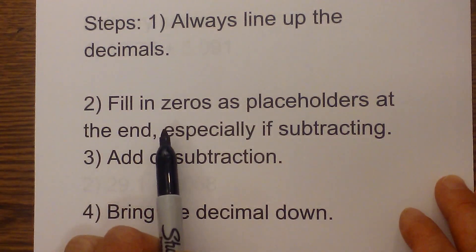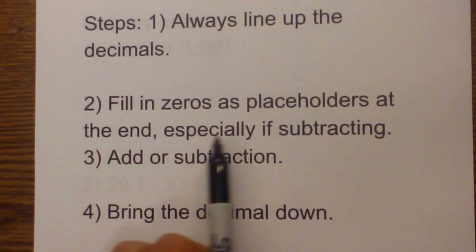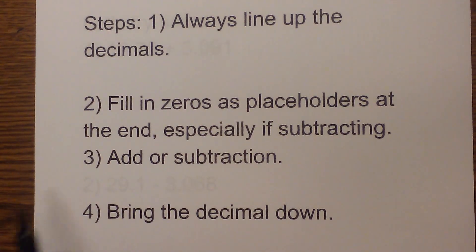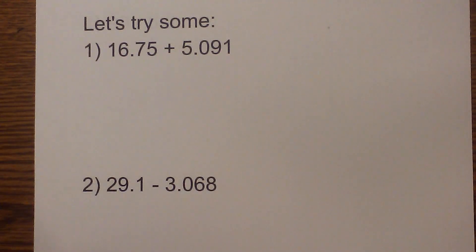Two, you fill in zeros as placeholders at the end, especially if subtracting. You add or practice subtraction, and then you bring the decimal down. So let's get started with a couple of examples.